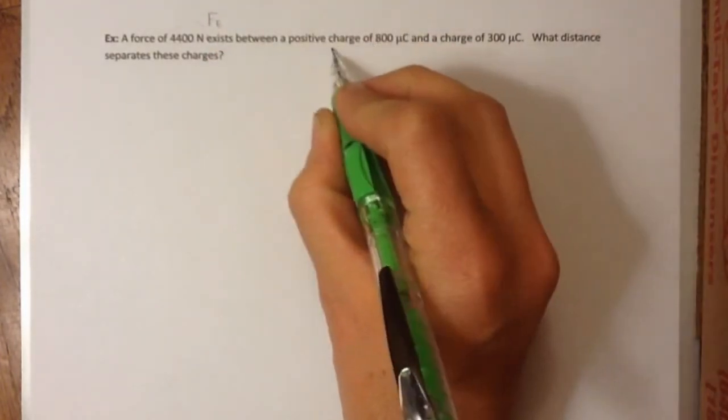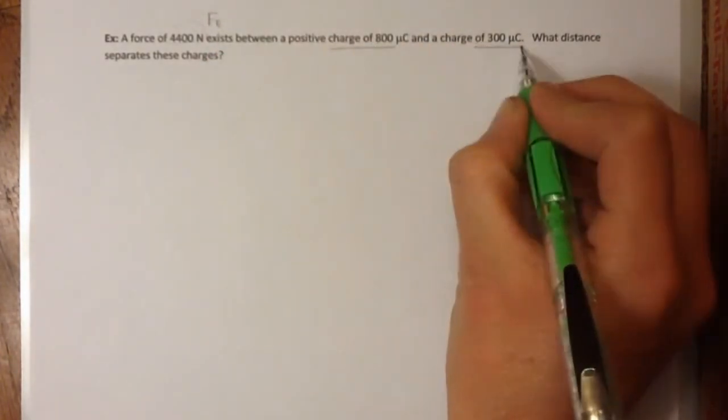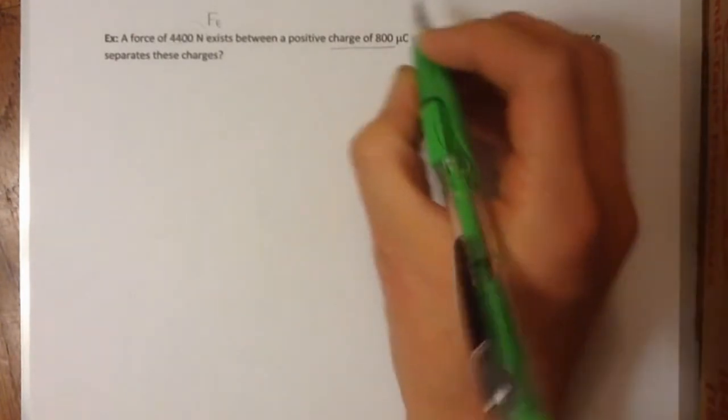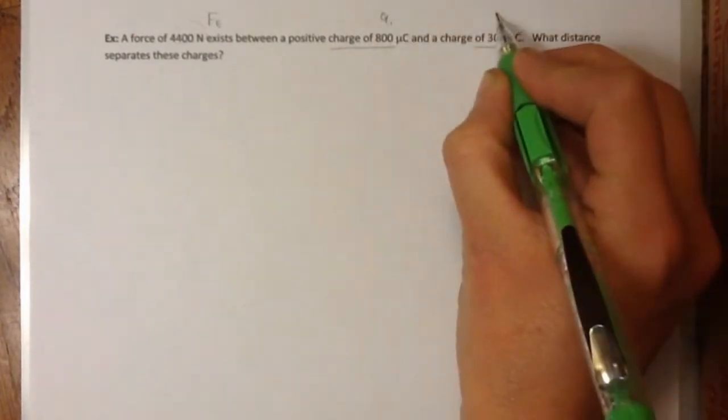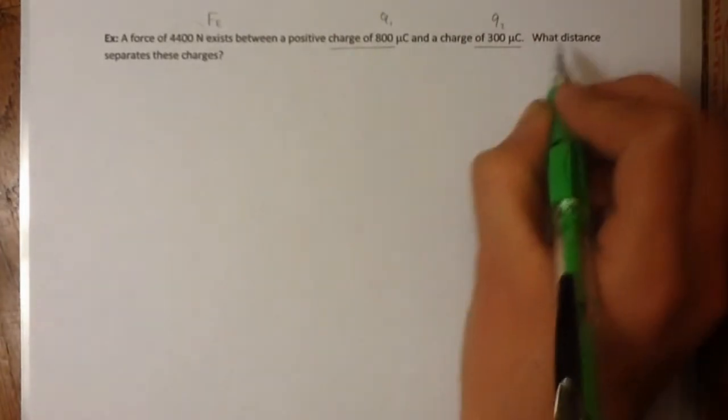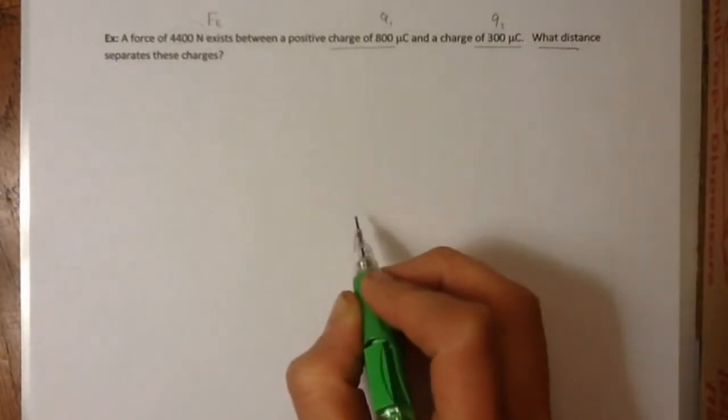So this right here is an electrostatic force. A charge of 800 microcoulombs and a charge of 300 microcoulombs. These are the charge values. So this must be Q1 and Q2. And then what distance separates them? I'm looking for a distance.